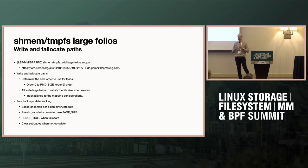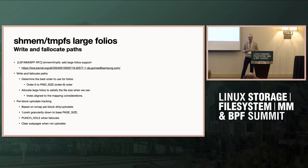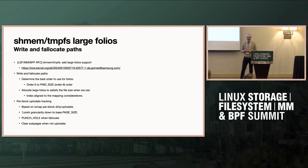My latest implementation of the large folios adoption is basically allocating a large folio based on the file size, using the mapping order that you have in the mapping requirements in the pagecache, as Luis was mentioning before. So you have high-order folios that are aligned to those requirements, and you can go all the way up to PMD size. That's the allocation logic for the order calculation — very conservative and very simple logic. This is exactly what file systems are doing with large folios, and the first one to adopt this logic was XFS.